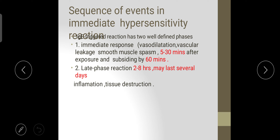The sequence of events in immediate hypersensitivity has two phases — immediate and late. In the immediate phase, vasodilation and vascular leakage with smooth muscle spasm occur 5 to 30 minutes after exposure, subsiding by 60 minutes. The late phase reaction occurs 2 to 8 hours later, may last several days, and causes inflammation and tissue destruction.